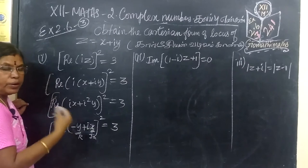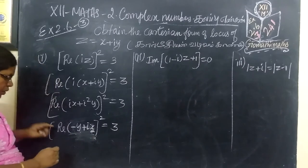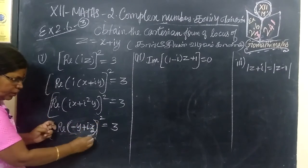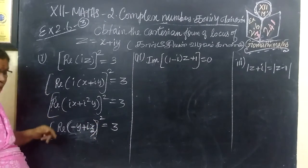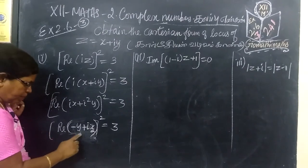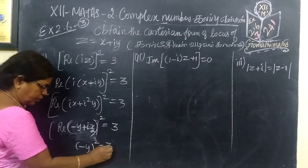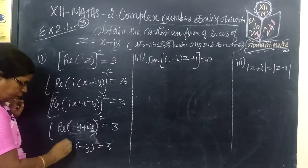So real part you are considering. What there is real part of this number. This part. Real part will be real part minus y whole square equal to 3. Students are counting mistake here.